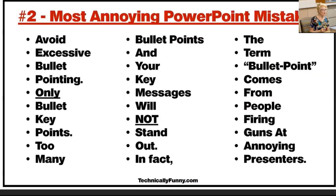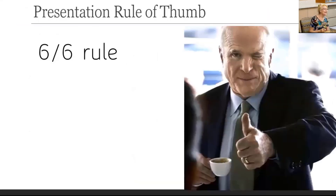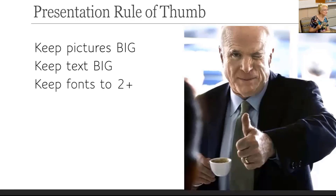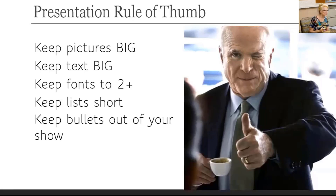What do we avoid at all costs? Bullet points! So if you need to share a list, follow the 6-6 rule of thumb: keep it to no more than 6 lines and no more than 6 words per line. Keep the pictures big, keep the text big, keep the fonts to 2+, keep lists short, and keep bullet points out of your show — that last one is 6 words, the limit.